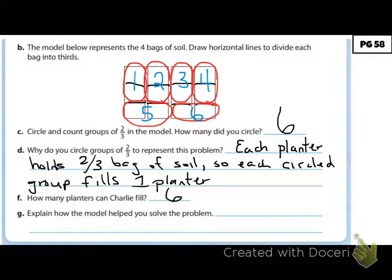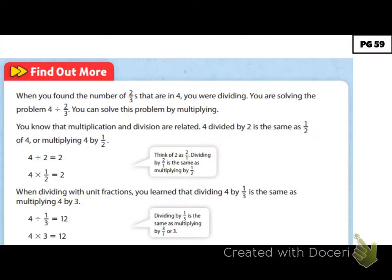How many planters can Charlie fill? He can fill six. And G, explain how the model helped you solve the problem. Well, you just make this simple. Don't make it hard, make it simple. When you're explaining something, keep it simple. Some of you guys know what this stands for. For the sake of school, we're going to call it the KISS method. If you ever hear me say that, it's just keep it simple. So you can count the groups of two-thirds that you did. That's how the model helped you. You just counted the groups of two-thirds. Piece of cake.